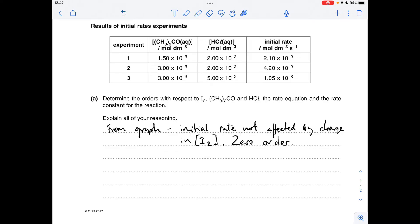So there's that written up there. So if we move on to the table now to get the orders with respect to propanone and HCl, we'll start with propanone. So we need to hold the HCl concentration constant if we can, and we can in experiments one and two. So if we have a look at how the propanone is changing, it's gone from that to that, so it's doubled. What's happened to the rate? It's doubled as well.